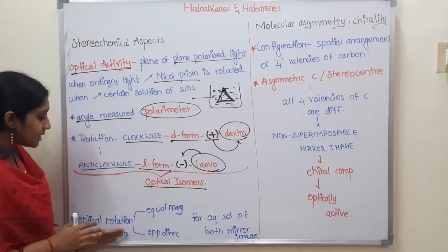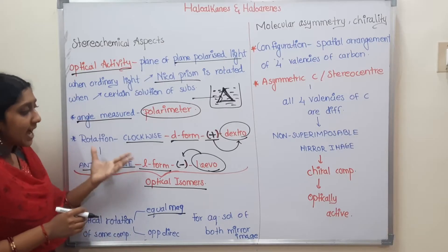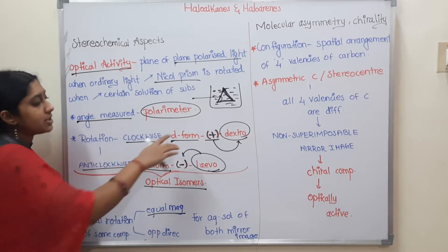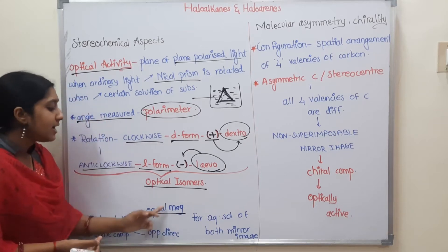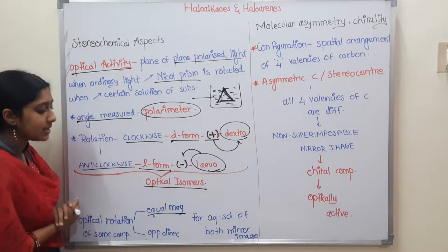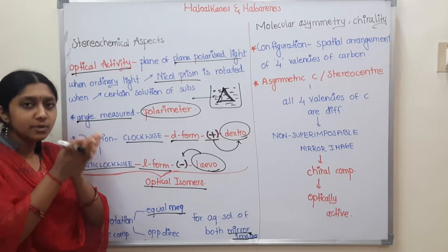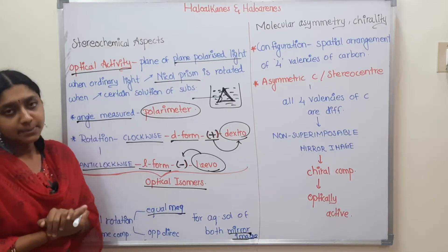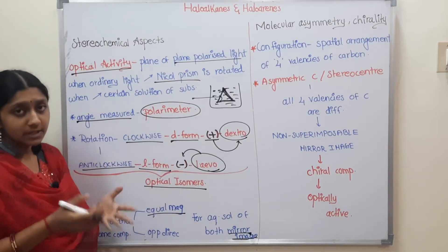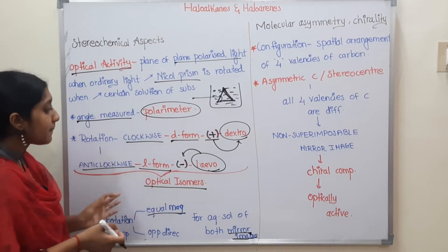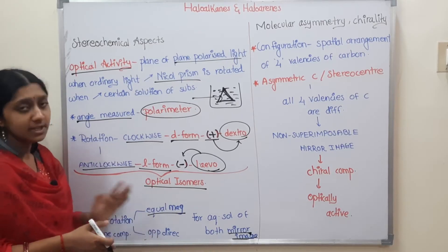The optical rotation of some compounds: the magnitude is equal — the value is the same — but the direction is opposite: one is clockwise and the other is anticlockwise. The second point is mirror image. A mirror image means that dextro and levo are mirror images of each other. Their directions are opposite — clockwise versus anticlockwise — but their magnitudes are the same.